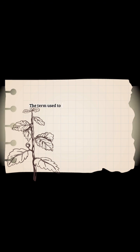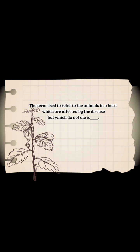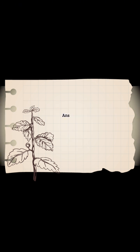The term used to refer to the animals in a herd which are affected by the disease but which do not die is: A - morbidity, B - immunity, C - vitality, D - mortality. Answer: A - morbidity.